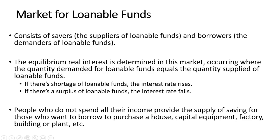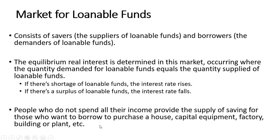People who do not spend all their income provide the supply of saving for those who want to borrow to purchase a house, capital equipment, factory, a building, or a plant, for example. The demand for loanable funds is downward sloping. As the interest rate rises, borrowing costs rise. Some investment projects will become unprofitable at these higher borrowing costs, and thus the quantity demanded for loanable funds will decrease.